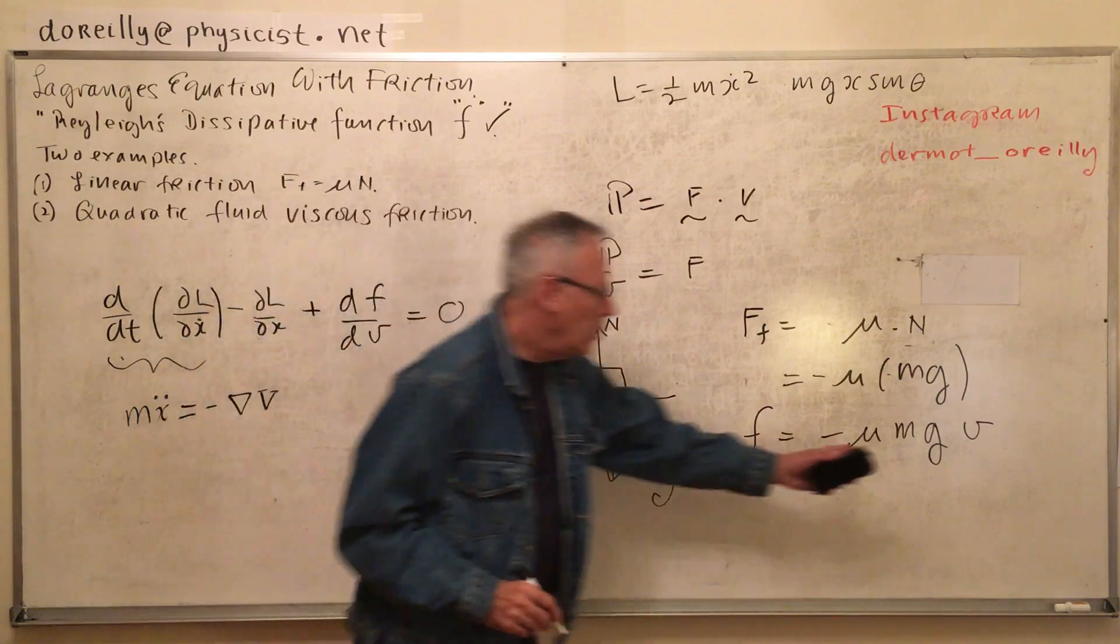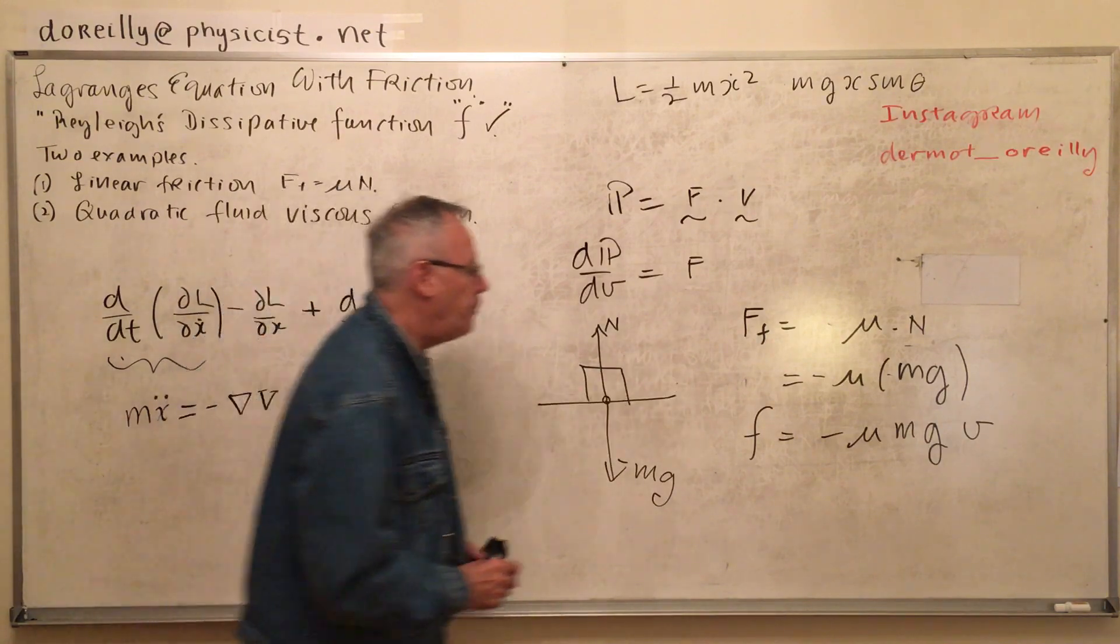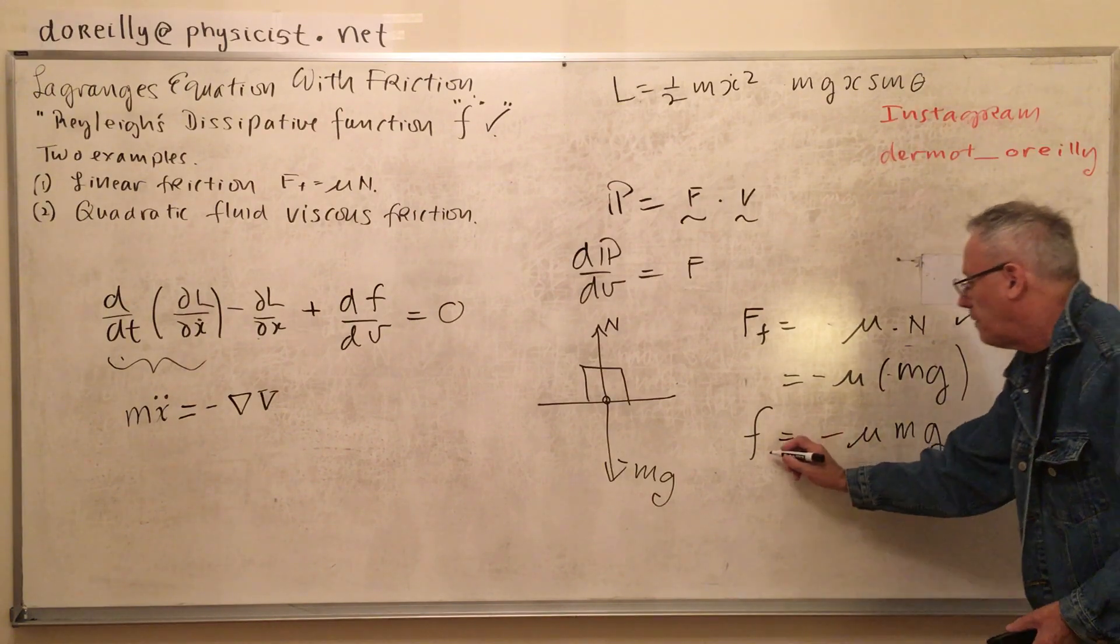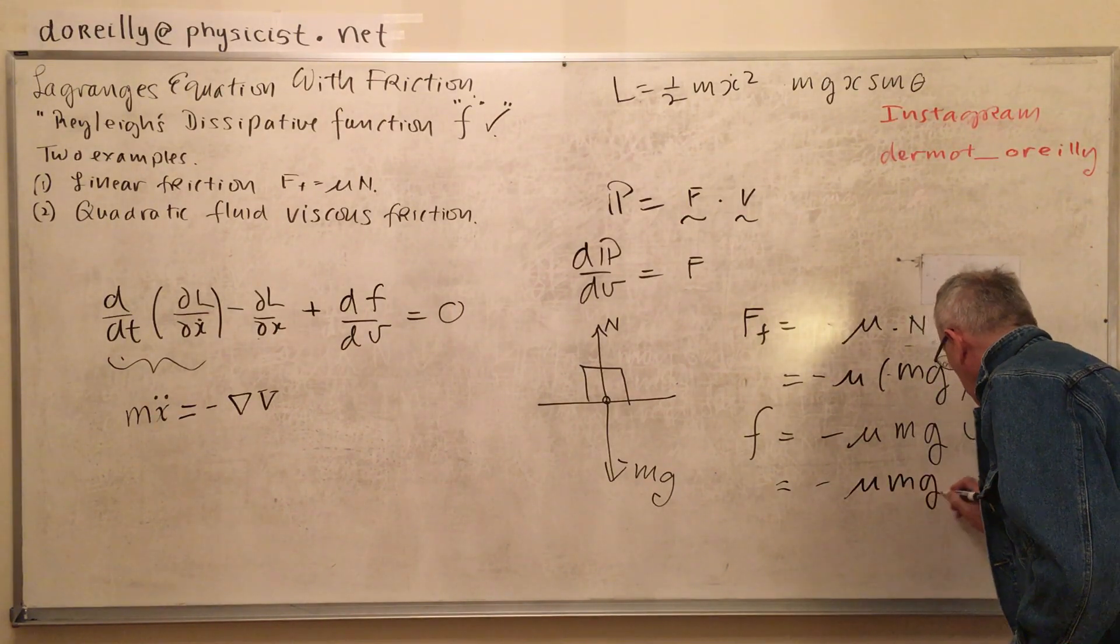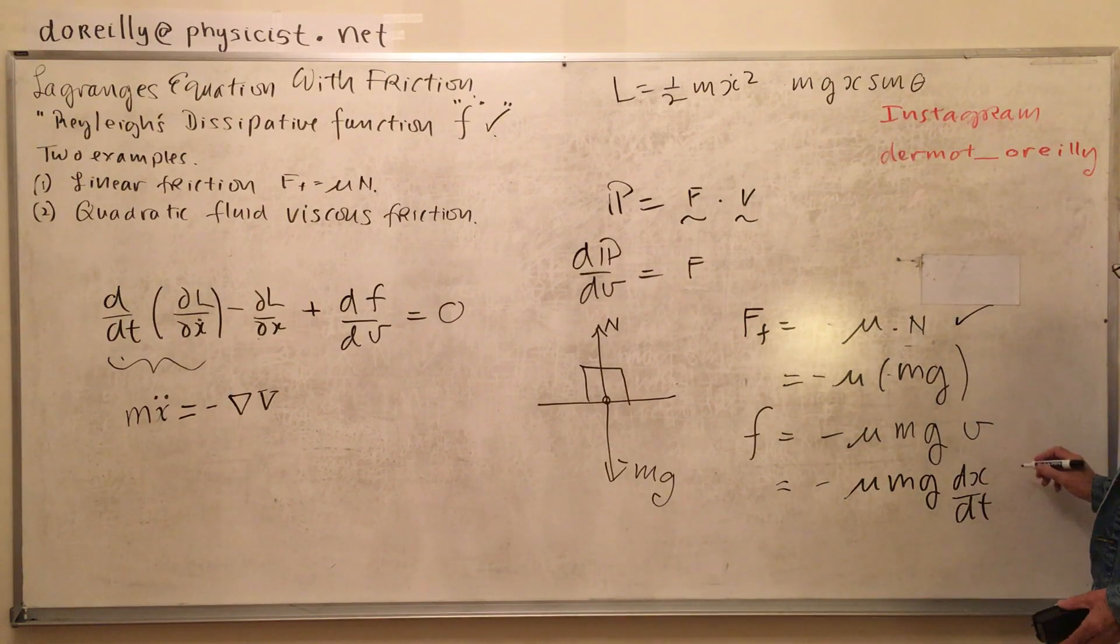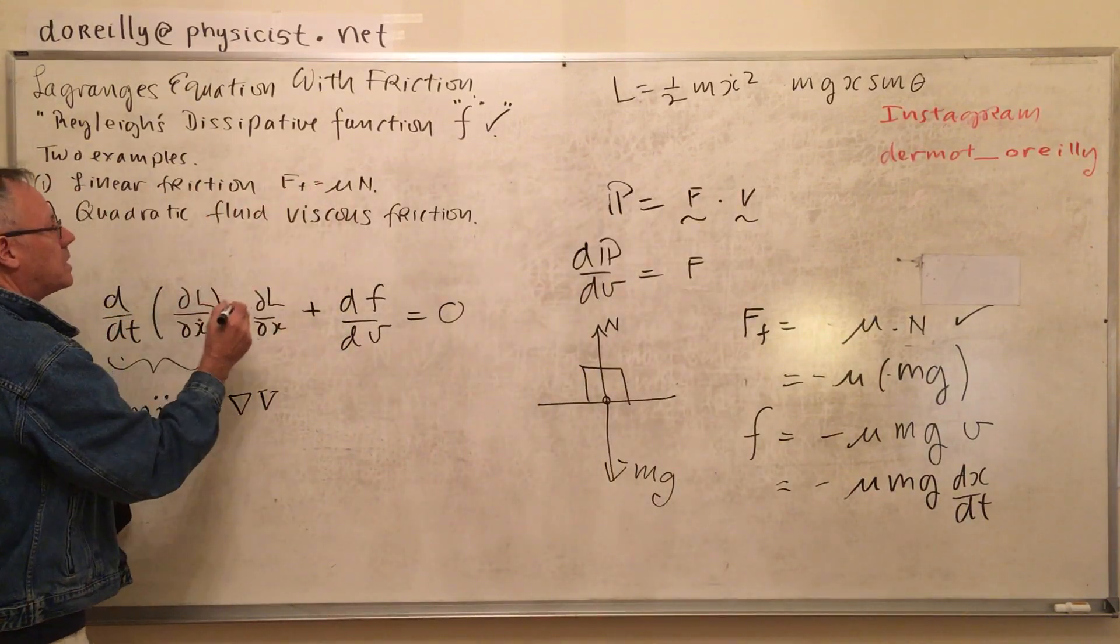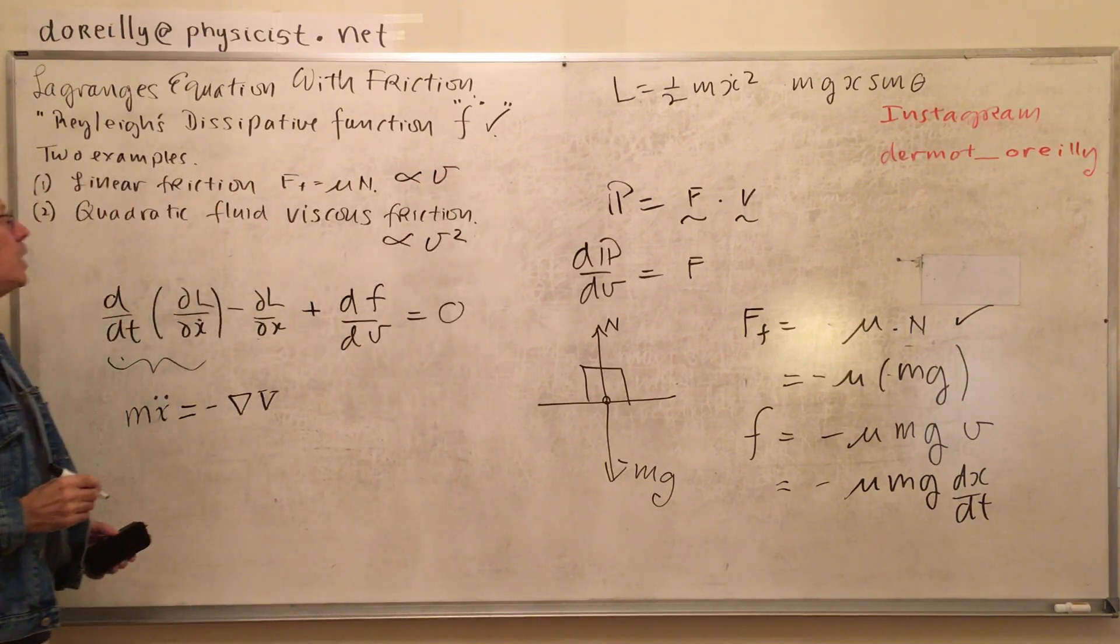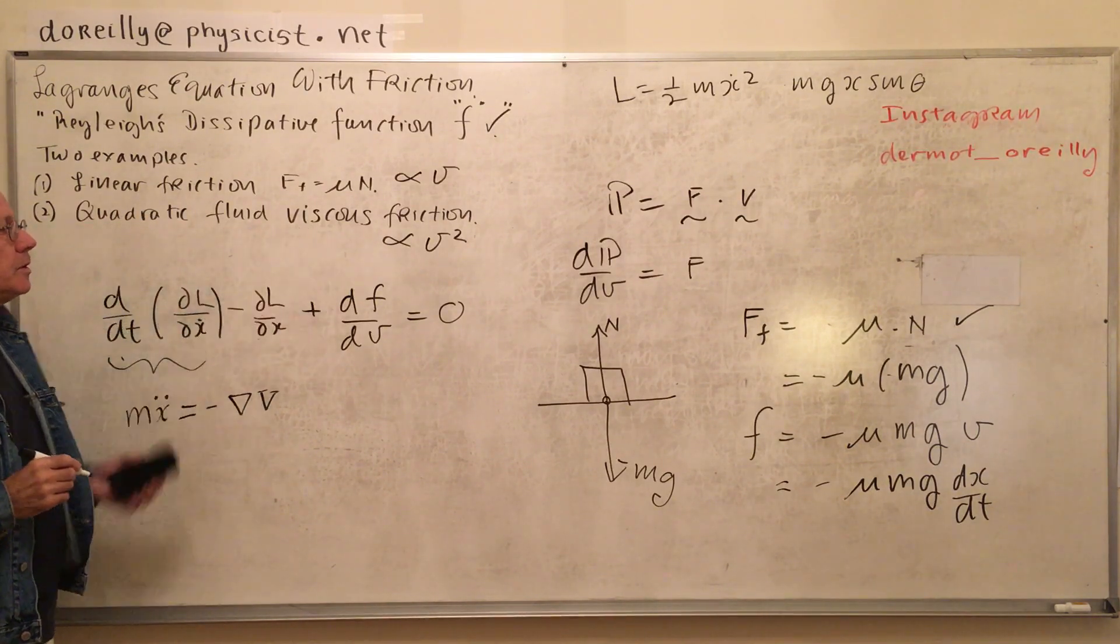In this kind of setup, the Rayleigh's dissipation function would be minus mu mg v. This is the case when the friction force is proportional to the normal, linear friction. The quadratic case would be a viscous fluid. Let's do both of those cases.